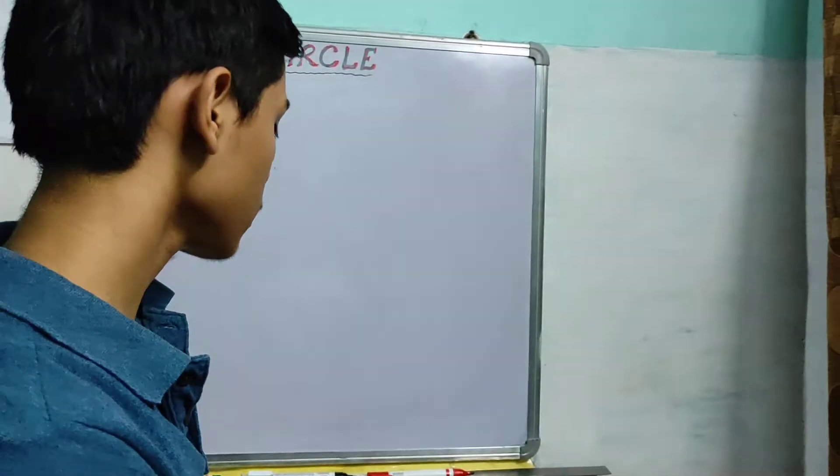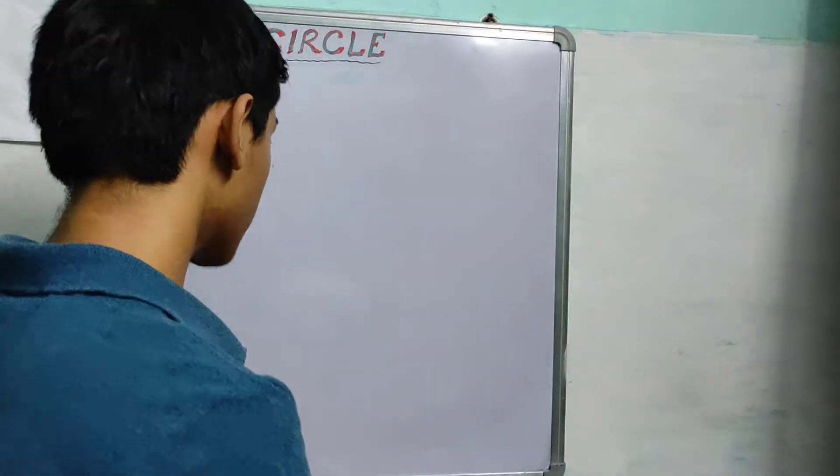Today we will study a new theorem which relates the diagonals and the sides of a cyclic quadrilateral. This theorem is known as the Ptolemy theorem, named after the person who proved it.